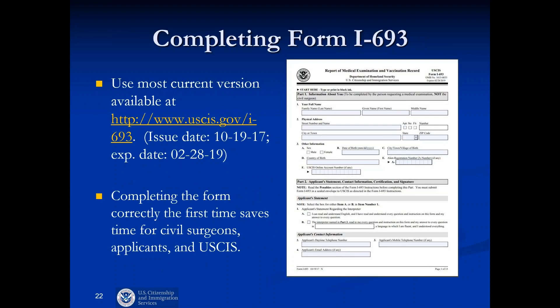The main subject of today's talk is completion of the Form I-693. Importantly, you must use the current version of the form. The latest update was last October, and that version must be used for any I-693 signed on or after January 2nd of this year. A new version of the form is coming out soon — we have published it in the Federal Register and expect it to be finalized within the next few months, so please be on the lookout.